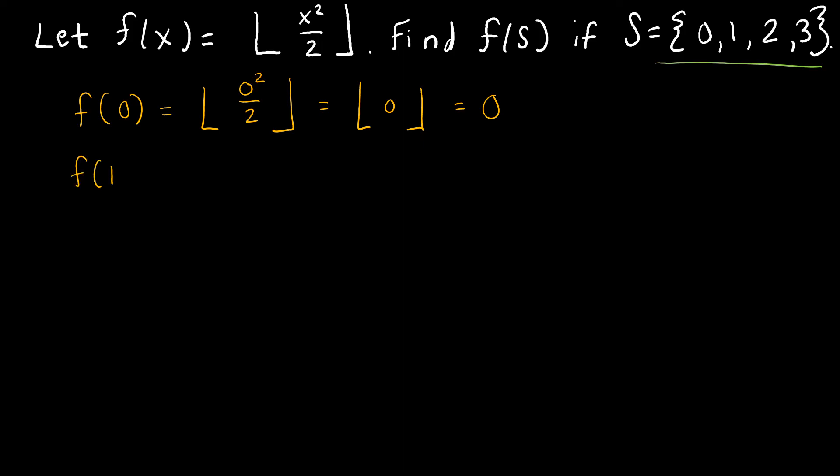If I'm looking at f of 1, f of 1 would be 1 squared over 2, and the floor function. 1 squared is 1, 1 divided by 2, that just gives me 1 half. So what is the floor function of 1 half? That is also 0.